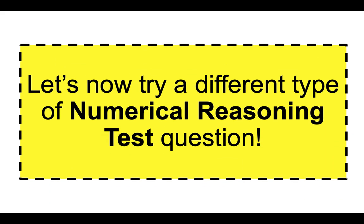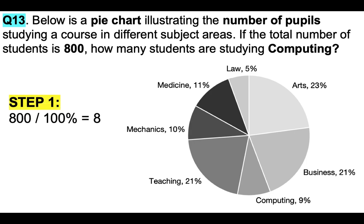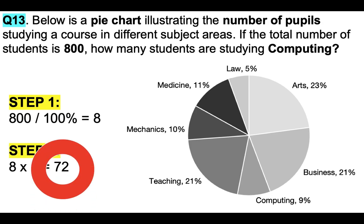Let's try a different type of numerical reasoning test question. Below is a pie chart illustrating the number of pupils studying a course in different subject areas. A lot of people make the mistake of letting the pie chart confuse them — but focus on the calculation. If the total number of students is 800, how many are studying computing? Computing is 9%. Divide 800 by 100 to get 1% = 8, then multiply 8 × 9 = 72. So 72 students are studying computing.